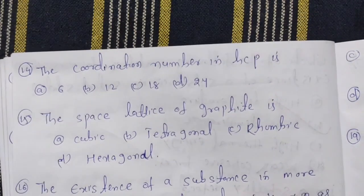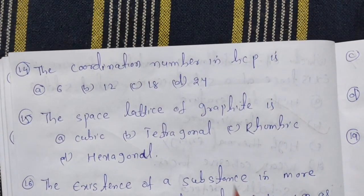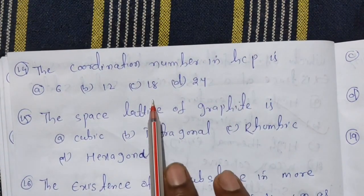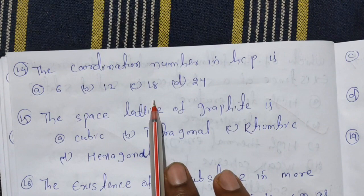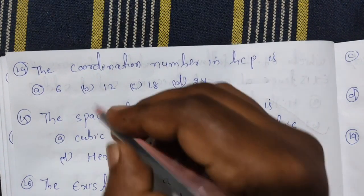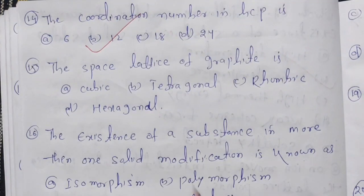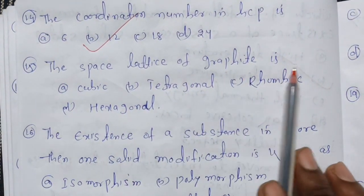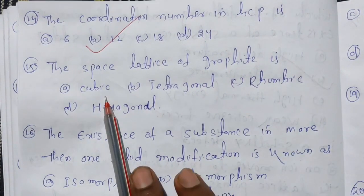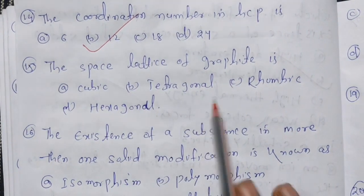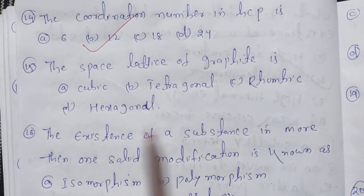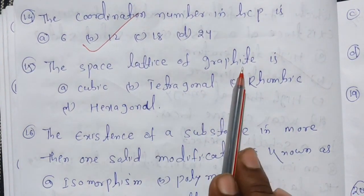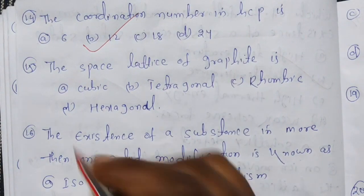Question 14: the coordination number of SCP is 12. The space lattice of graphite — is it cubic, tetrahedral, rhombic, or hexagonal? The space lattice of graphite is hexagonal.